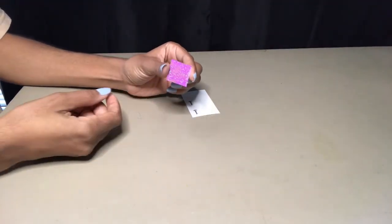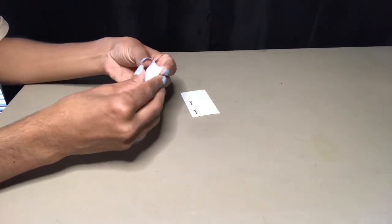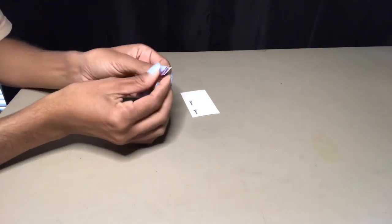Now for assembly, you're going to take one of the tabs that you cut out, fold it in half. Make sure you get a good crease in.